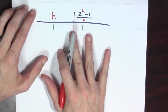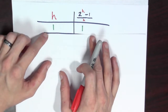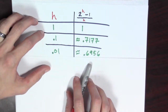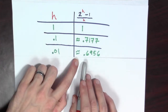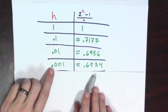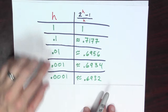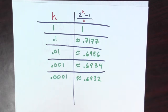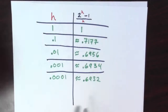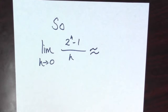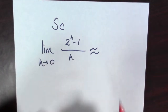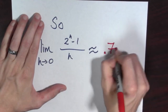We plug in h values coming from the right: plugging in 1 gives about 1; 0.1 gives around 0.7177; 0.01 gives about 0.6956; 0.001 gives around 0.6934; and 0.0001 gives about 0.6932. That's our limit from the right. Comparing the two sides — 0.6931 and 0.6932 — we see we're converging. So the limit as h goes to 0 of (2 to the h minus 1) all over h is around 0.7.